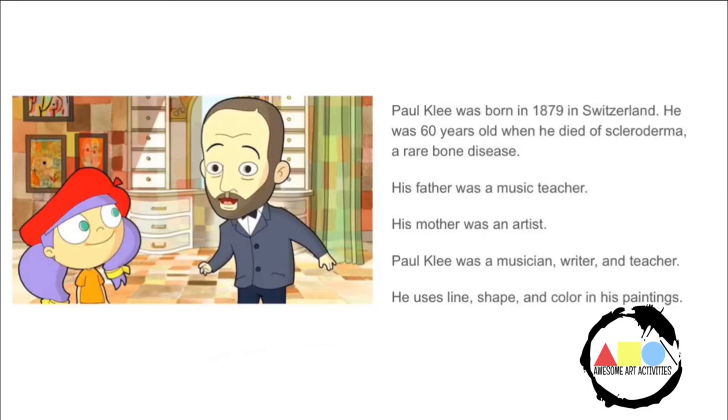He was born in 1879 in Switzerland. He was 60 years old when he died of scleroderma, a rare bone disease. His father was a music teacher, his mother was an artist, and Paul Klee was a musician, writer, and teacher.